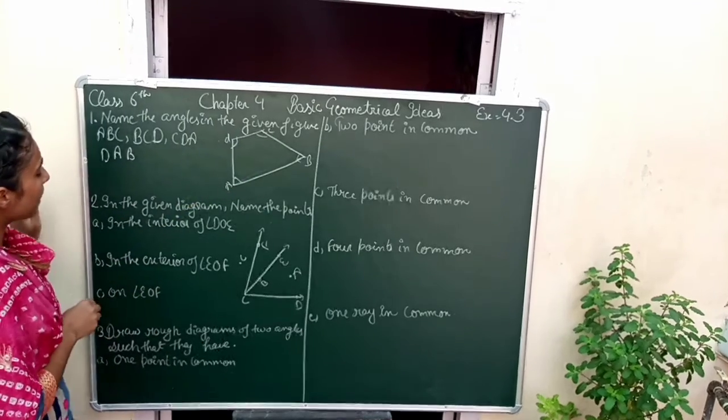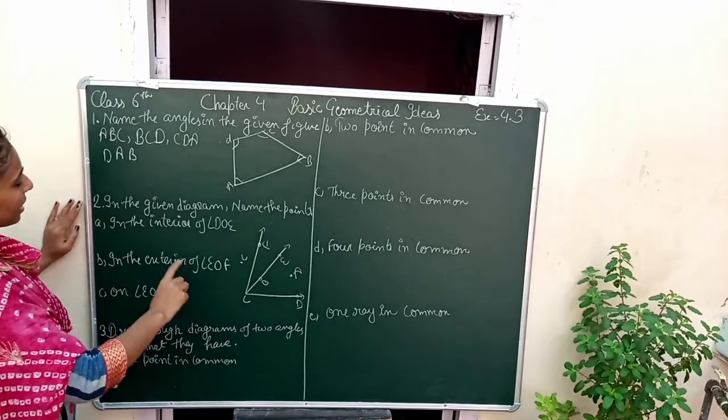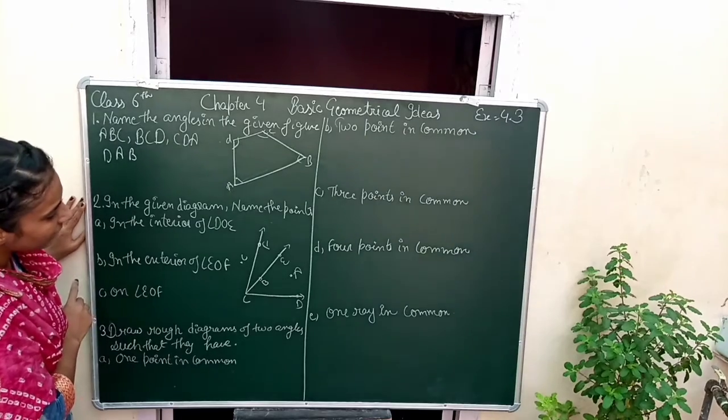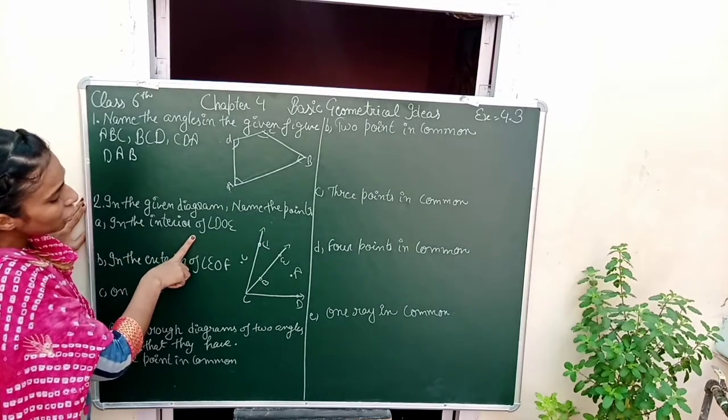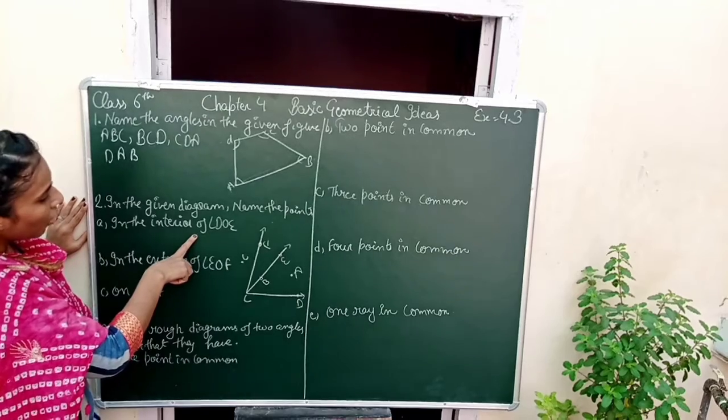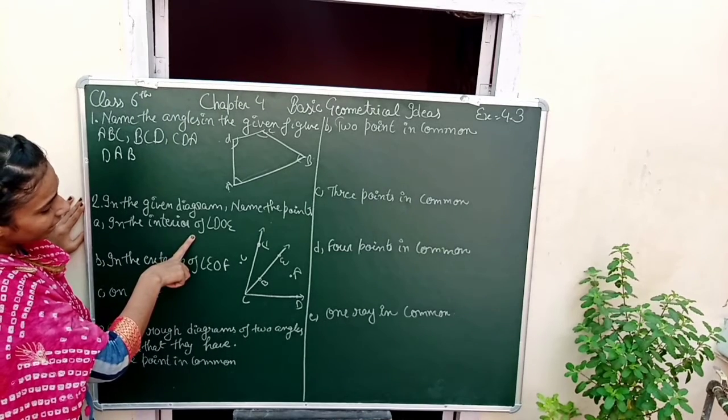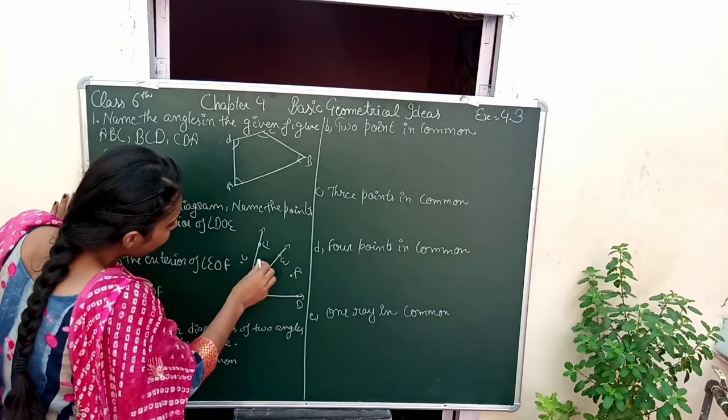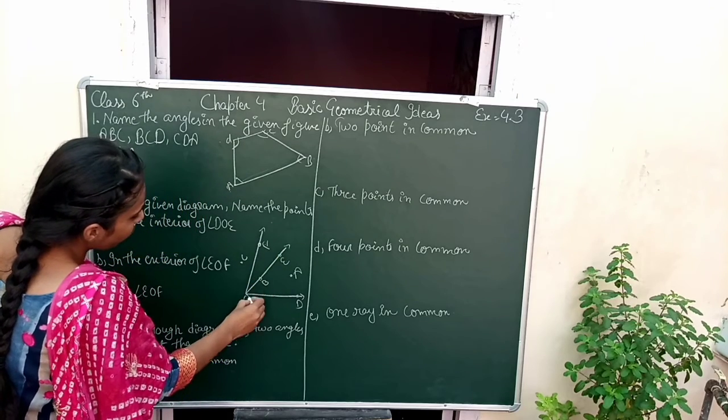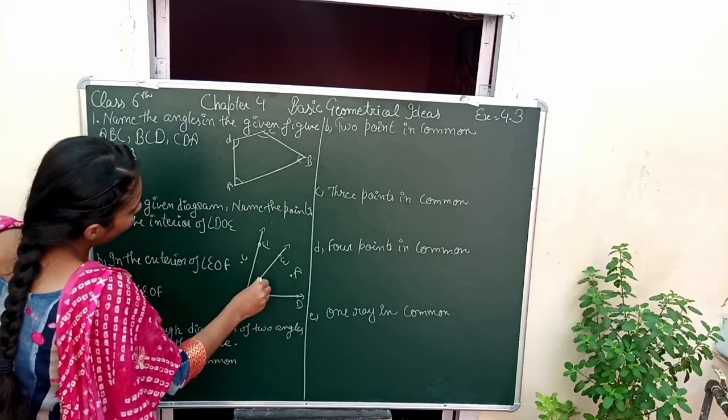Next, what is the given diagram? The diagram is telling us which points. What is the point in the interior of angle DOE? That point which is in the interior of angle DOE is point E.